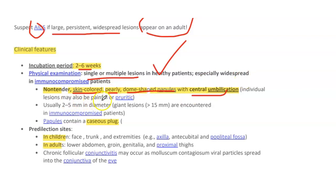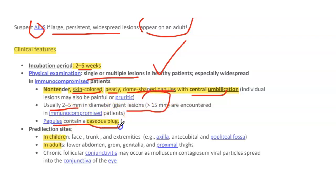Individual lesions may also be painful or pruritic. They are usually 2 to 5 mm but can be giant lesions greater than 15 mm in immunocompromised patients. The papules contain caseous plugs, and squeezing the lesion produces a cheesy material.